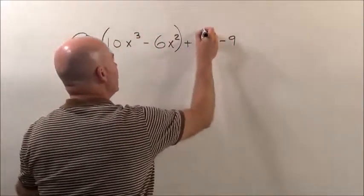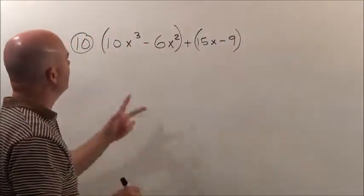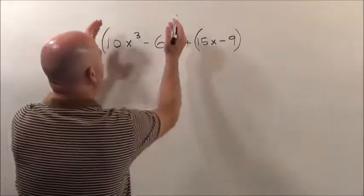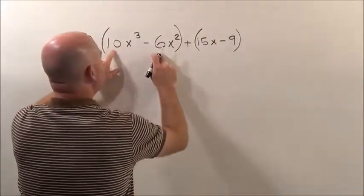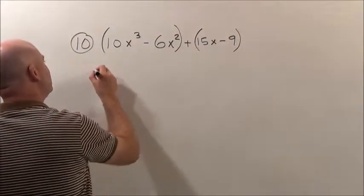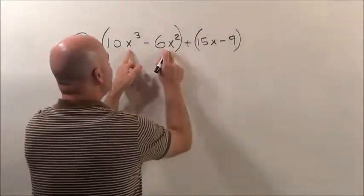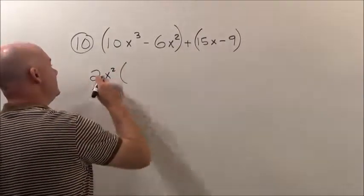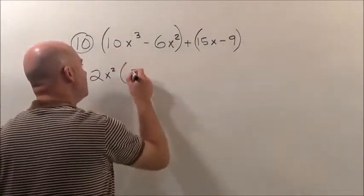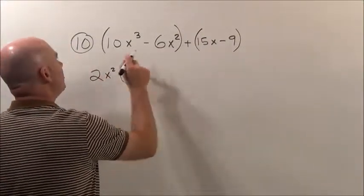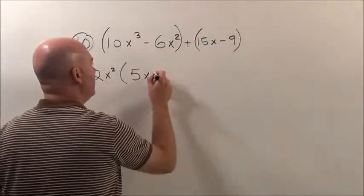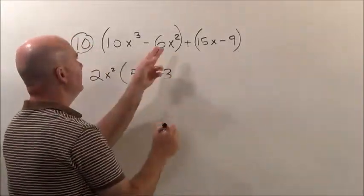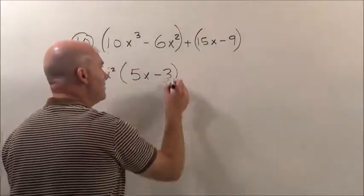So I group those together. Now I look and say to myself, what can be factored out of what's inside these parentheses? 10 and 6 both have a common factor of 2, so I pull a 2 out. x³ and x², so x² can come out. Let's see, 2 times what gives you 10? 2 times 5. x² times x will give you the x³. Minus, 2 times what gives you 6? A 3. And you've already pulled all the x² out, so that's what we have right there.